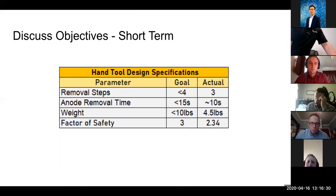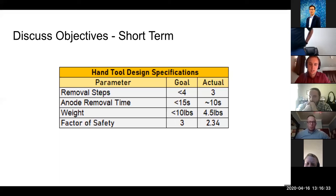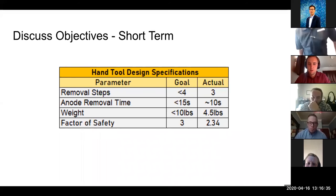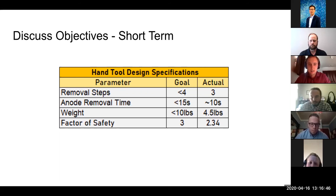Our short-term design objectives are listed here in this table. A few of the important ones were weight. We wanted to design the hand tool to be less than 10 pounds and our actual weight for the hand tool is 4.5 pounds. The important thing here was to decrease the number of removal steps. Our goal was less than four and we achieved three. As was discussed, our factor of safety is not as high as we'd like, but we feel it is appropriate given the magnitude of force that can be applied on the hand tool.